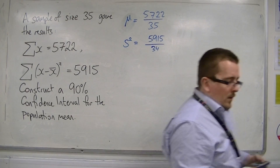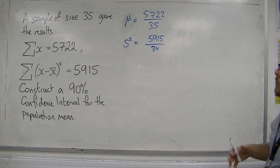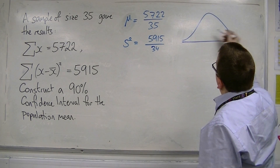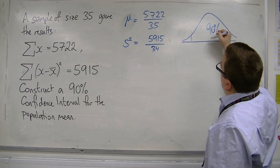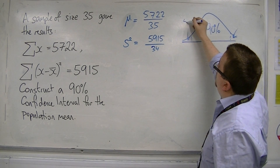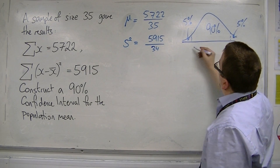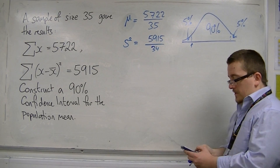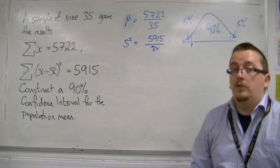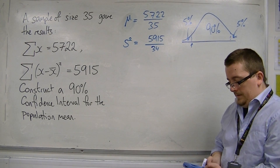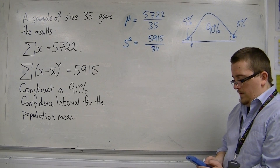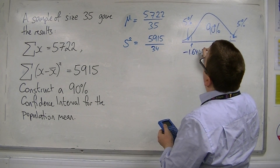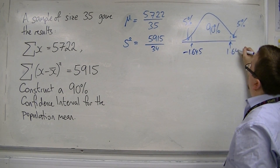Now, if I'm looking for a 90% confidence interval, we want the middle to be 90%, so these tails must be 5% each. I want to do the inverse norm of 0.05 to find the z value. You can do that on your formula booklets or on the calculator. The inverse norm of 0.05 is minus 1.645, and the other one is positive 1.645.